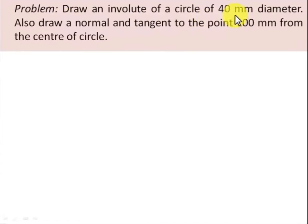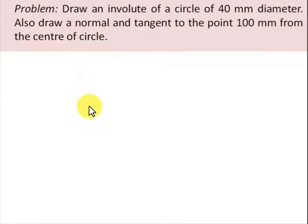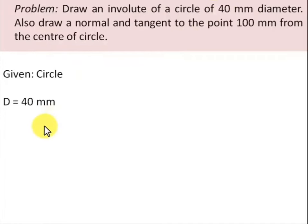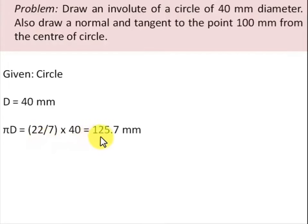Draw an involute of a circle of 40mm diameter, and also draw a normal and tangent at a distance of 100 millimeters from the center of the circle. We've been given a circle with a diameter of 40 millimeters. If you find the circumference of the circle it works out as pi×d, giving us 125.7mm.